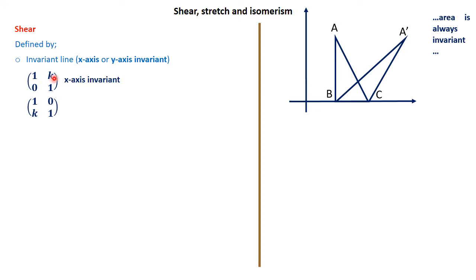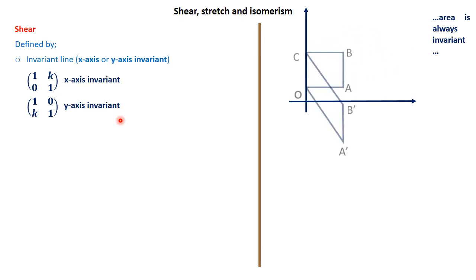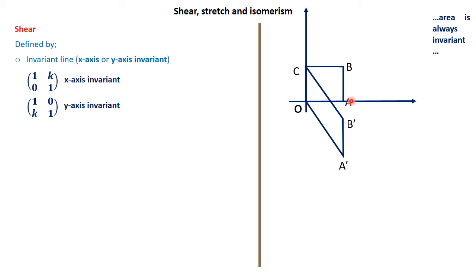The matrix can also be of the form (1, 0, k, 1), where k is a number, and when it's that way it's normally a y-axis invariant. An example of that is a triangle OABC which has been transformed to O, A prime, B prime, and C. Notice that O and C appear in both the image and the object and did not change. In this case the y-axis is the invariant line — because the line OC was on the object and it did not change. So this time around it is y-axis invariant.